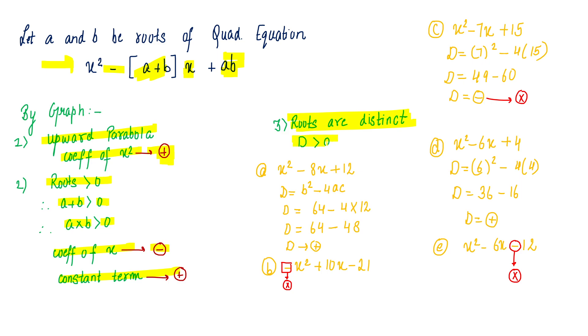So I have two distinct roots, and this is a fourth condition. So yes, A is in the option. Reason being, my four conditions are satisfied. B gets rejected because the first condition is rejected: the coefficient of x squared is not positive.